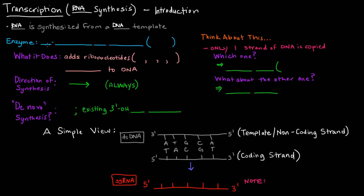So what is the name of the enzyme that actually does this? It is called a DNA-dependent RNA polymerase, or just RNA polymerase. RNA polymerase because it's making RNA, DNA-dependent because it uses DNA as a template. Now what does the enzyme actually do?